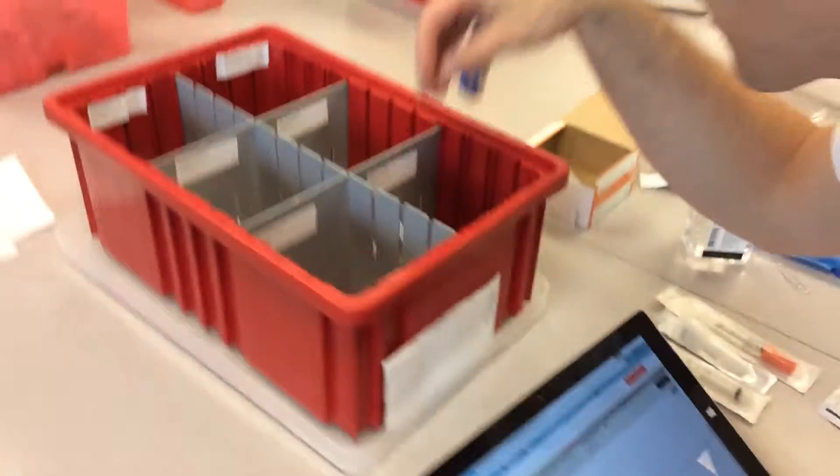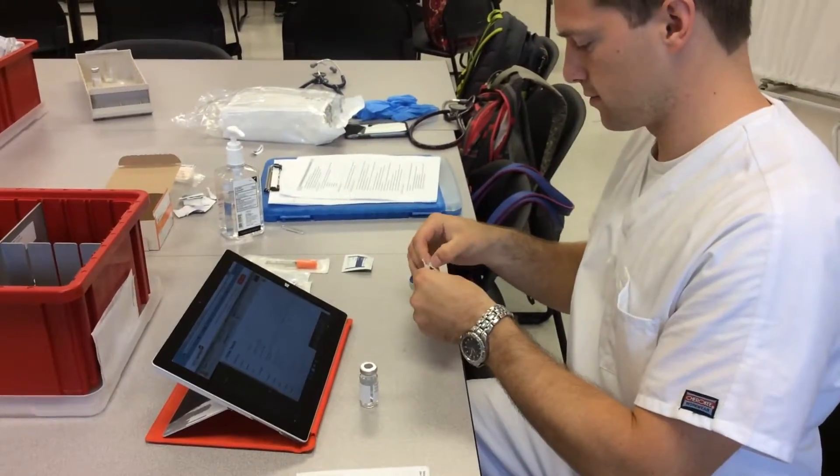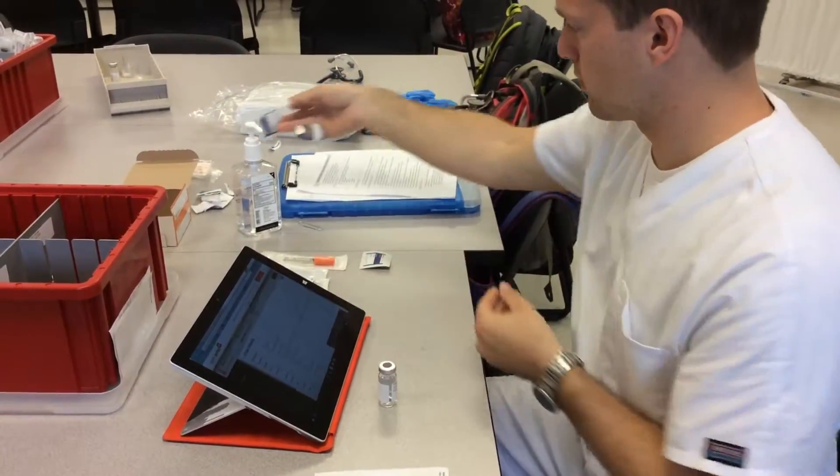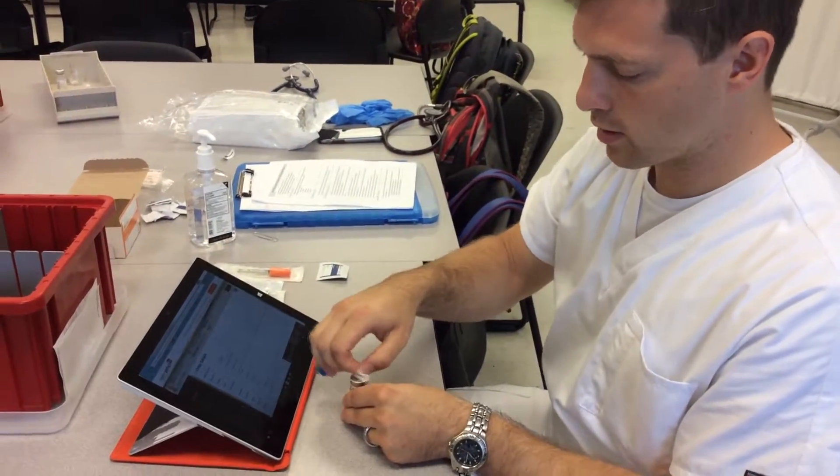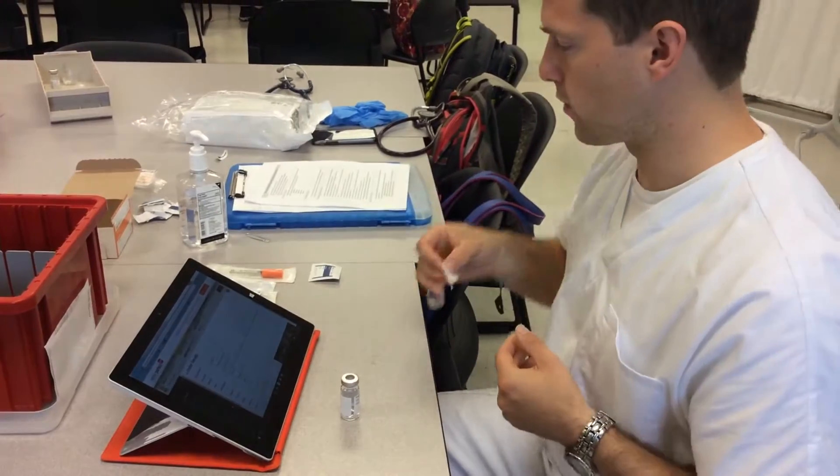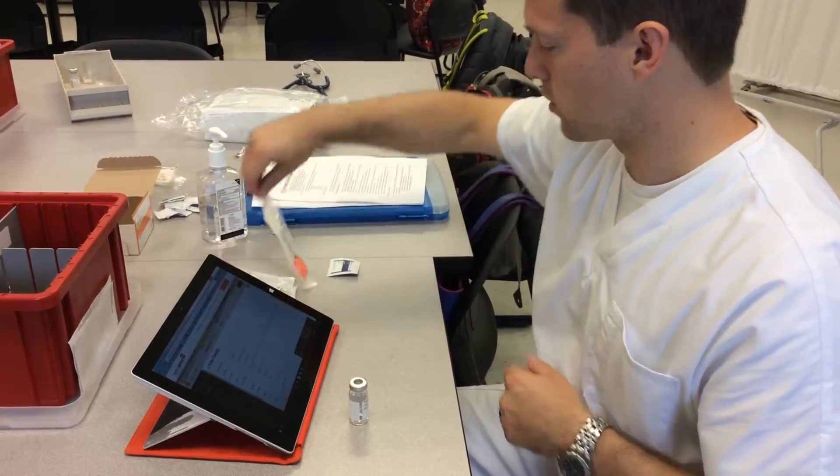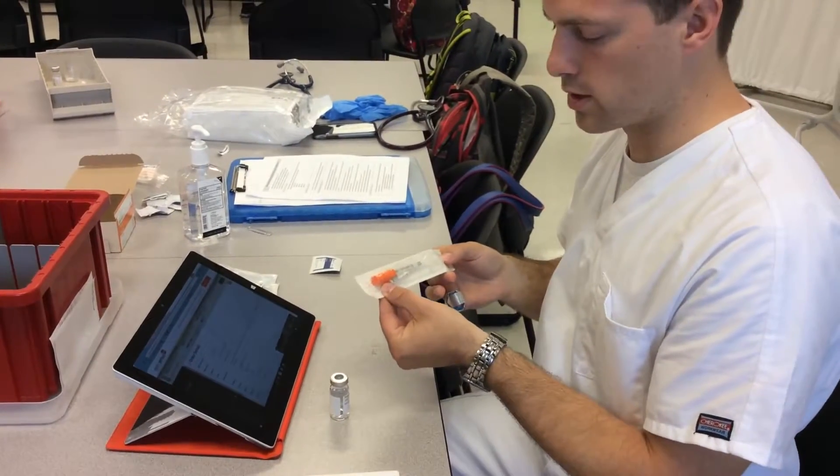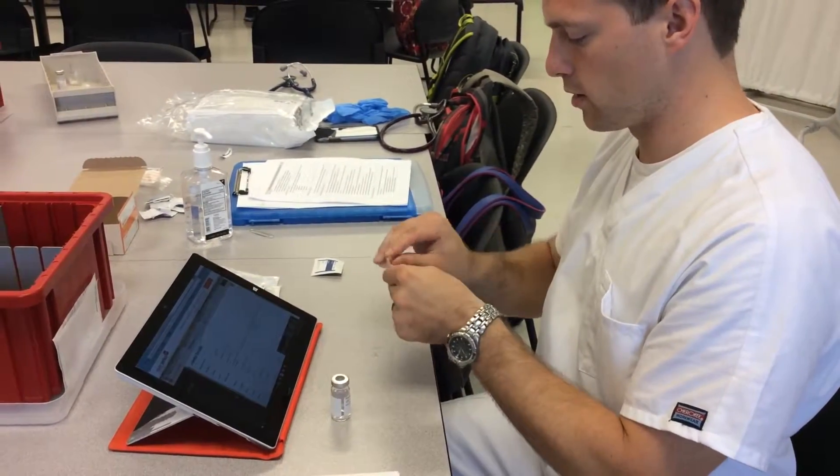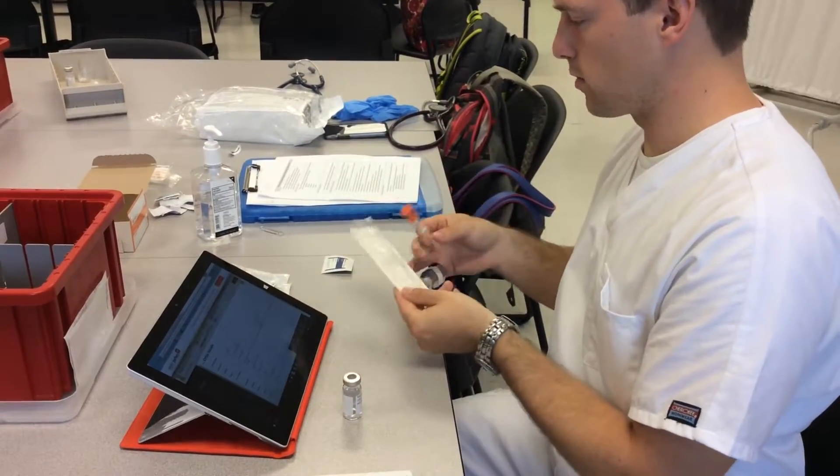So I'm going to get regular insulin out, get an alcohol wipe. The package is still intact. For 15 seconds I'm going to go around the top here and let that dry. While that's drying, I'm going to get the correct syringe - a universal insulin syringe with an orange cap so everybody knows that it's insulin.